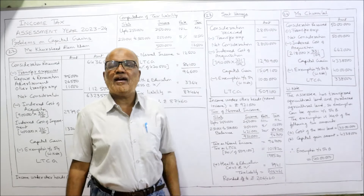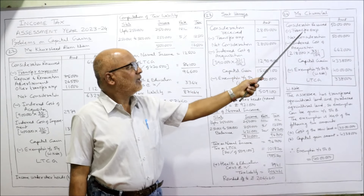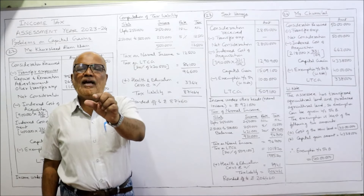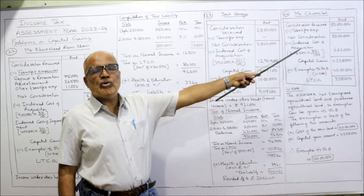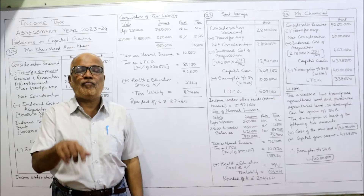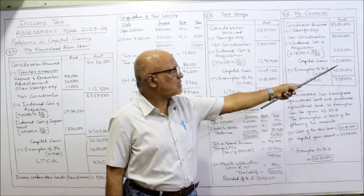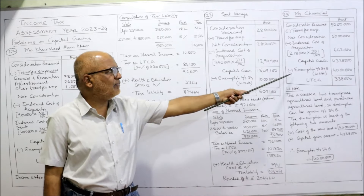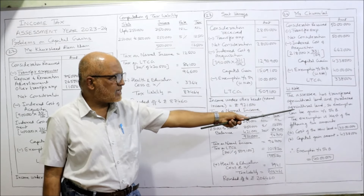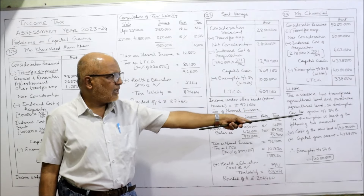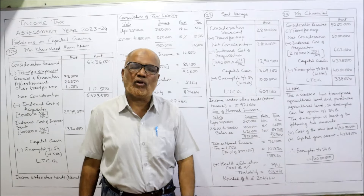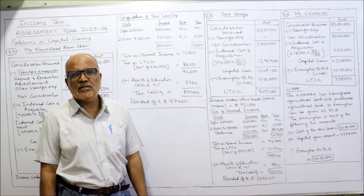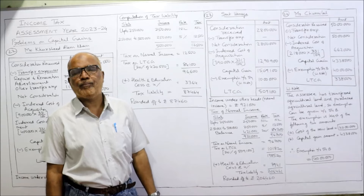Consideration received: Rs. 50,00,000 (Rs. 5,00,000 × 10). No transfer expenses. Indexed cost of acquisition: 10 acres at Rs. 21,800 = Rs. 2,18,000 × 331 ÷ 109 (the index number for the year of purchase) = Rs. 6,62,000. Capital gain: Rs. 50,00,000 − Rs. 6,62,000 = Rs. 43,38,000. Exemption under section 54B is the lesser of cost of new agricultural land (Rs. 40,00,000) or capital gain (Rs. 43,38,000). Rs. 40,00,000 is less, so exemption under section 54B is Rs. 40,00,000.